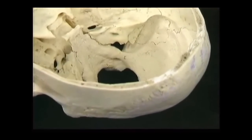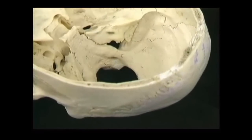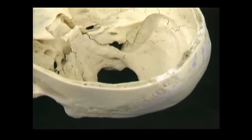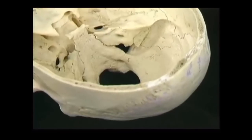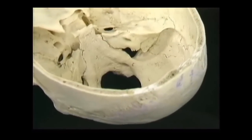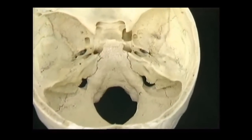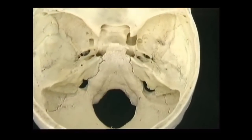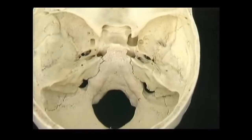Below and medial to the jugular foramen is the hypoglossal canal. Above the jugular foramen is the internal auditory meatus for the vestibulocochlear and facial nerves. The carotid canal ends here at the foramen lacerum, as we'll see in the next section.